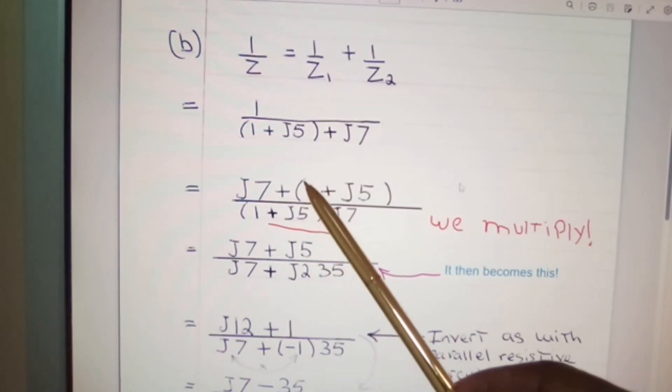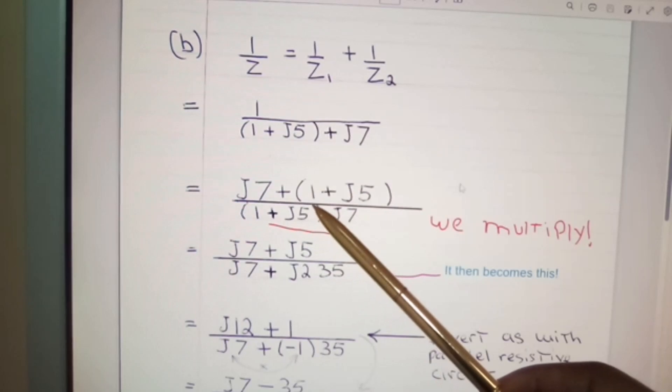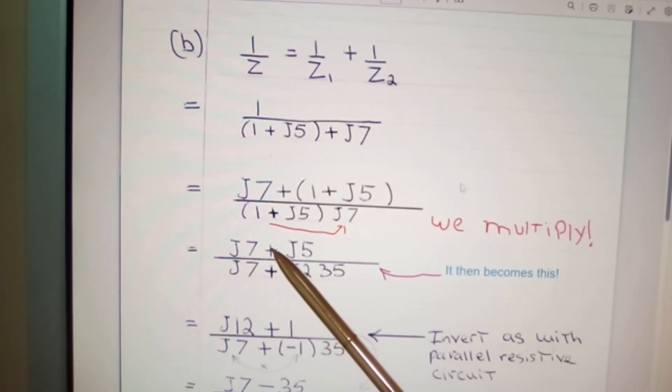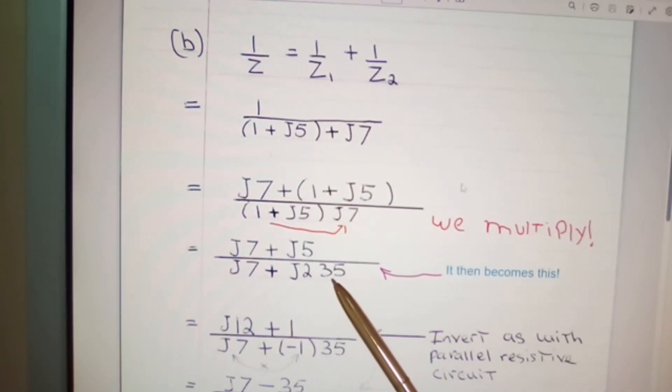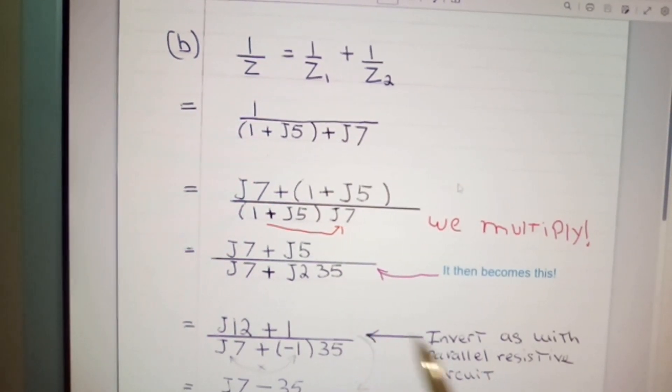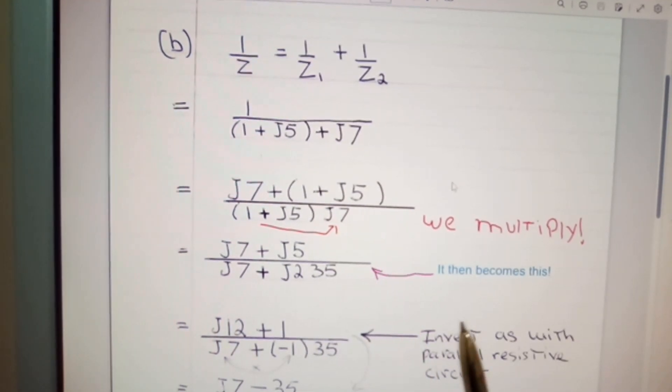So J7 plus open bracket 1 plus J5 close bracket over open bracket J7. Here I've said we multiply. And then it becomes this: J7 plus J5 over J7 plus J squared 35. Now, I must have put 35 here for a reason. What do we know that gives us 35? 5 times 7 is 35. Somewhere along the line here, I would have multiplied 5 times 7 in order to take it out of the equation.